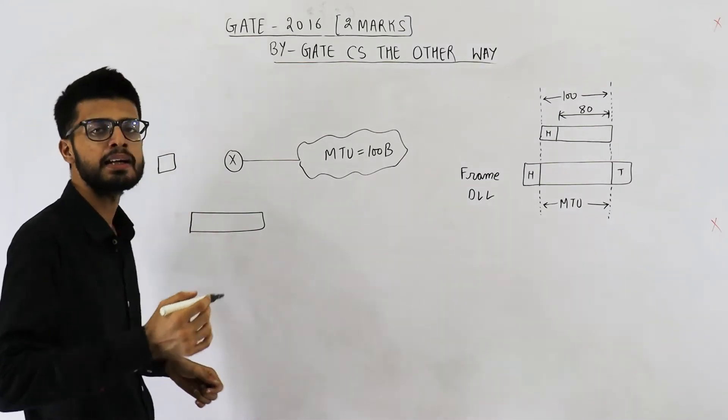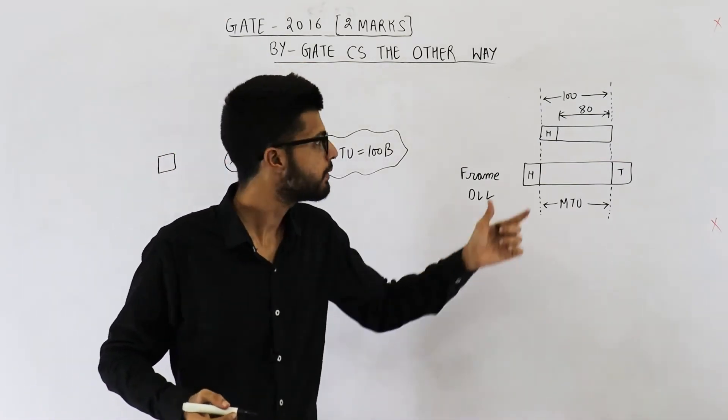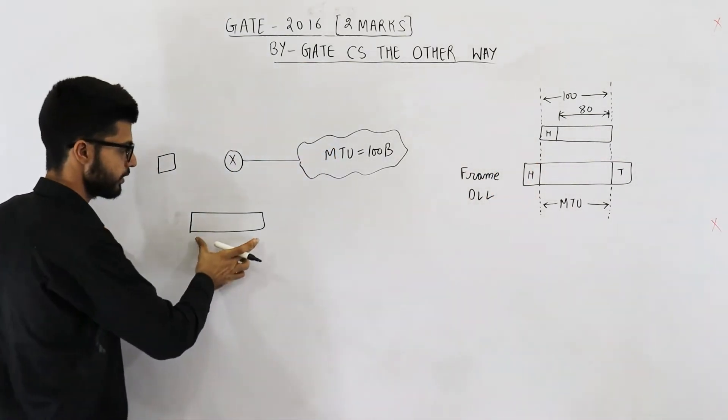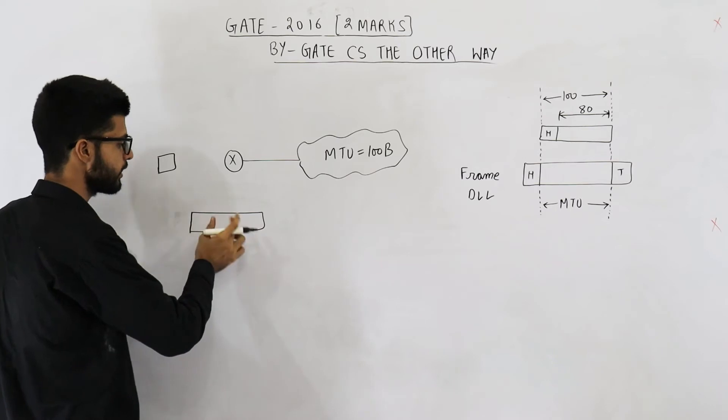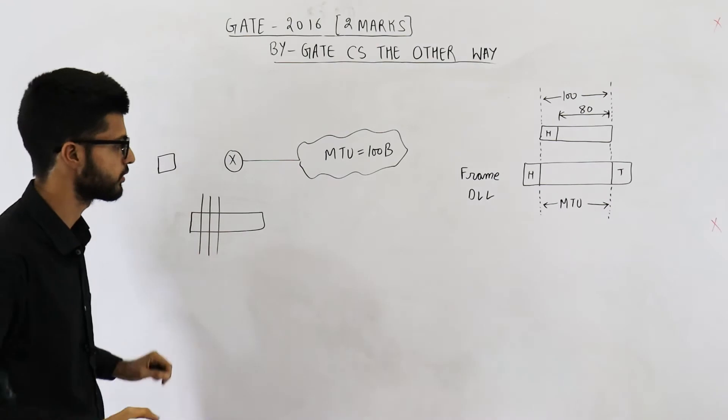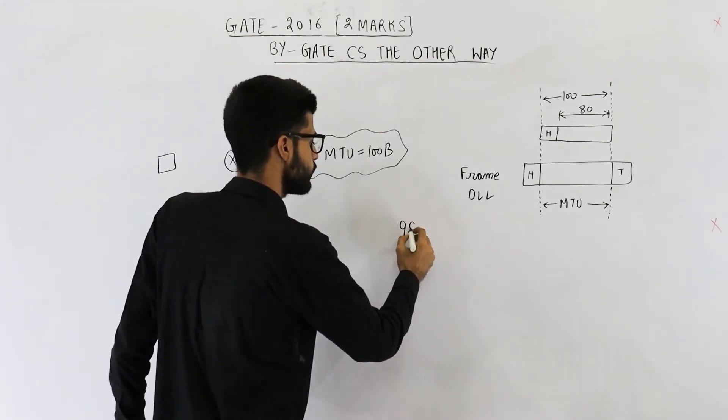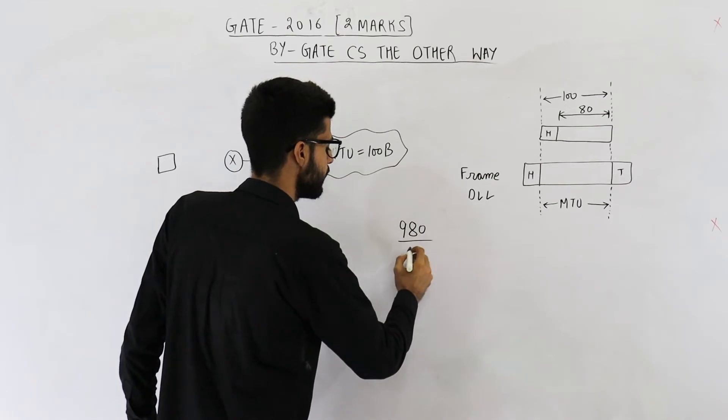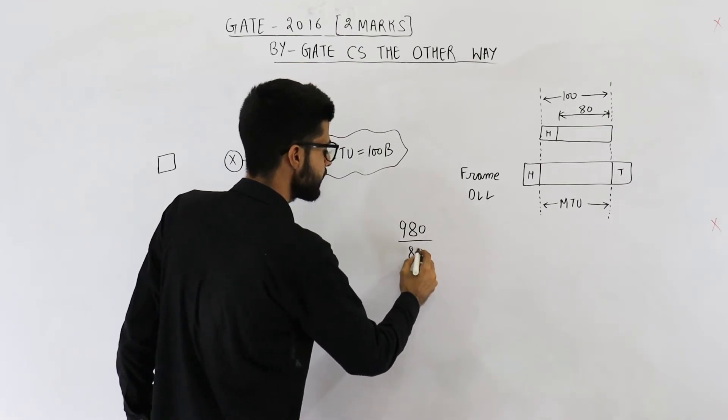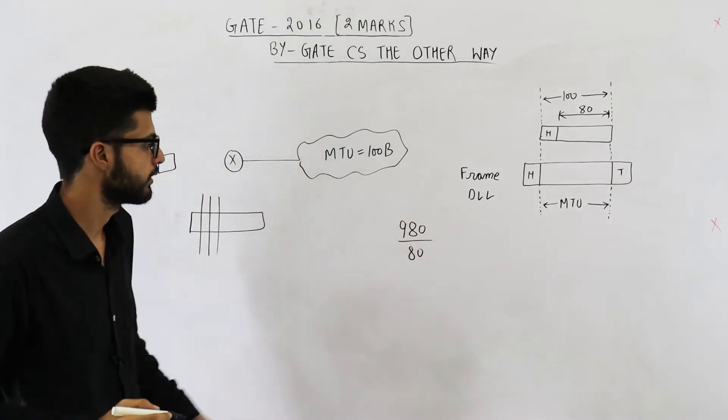Now maximum data in a fragment can be 80 bytes. So this entire data of the original datagram will be divided into smaller parts. Each part of 80 bytes. How many parts will be created? That is the total data which was 980 divided by maximum data that can be present in one fragment that is 80.